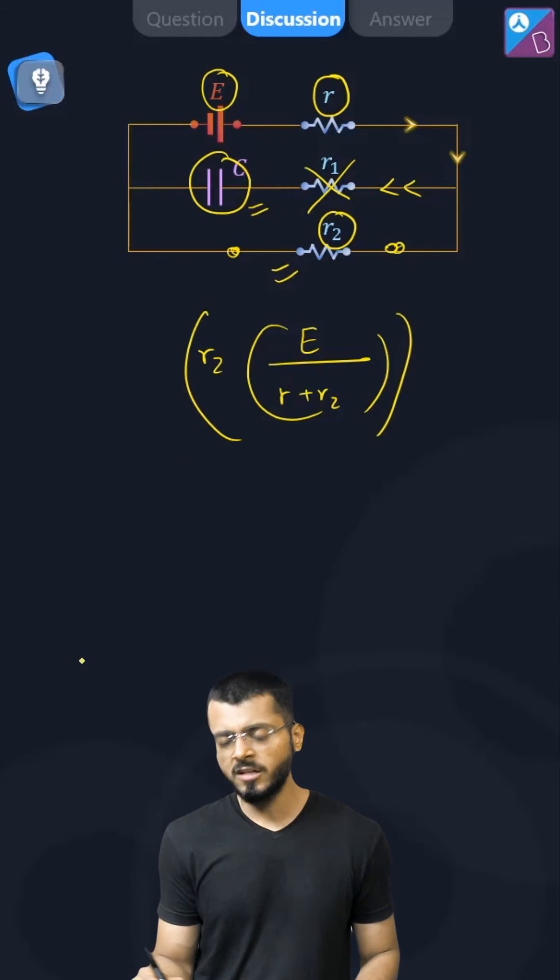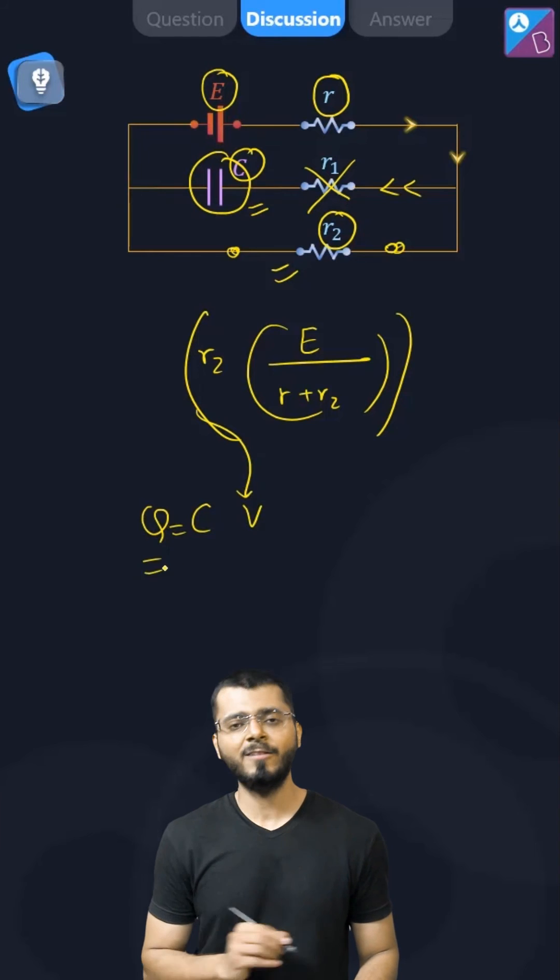So what is the value? Potential difference is this much, capacitance is this much, Q equals C into V. We just have to multiply this one and we'll get the value of charge.